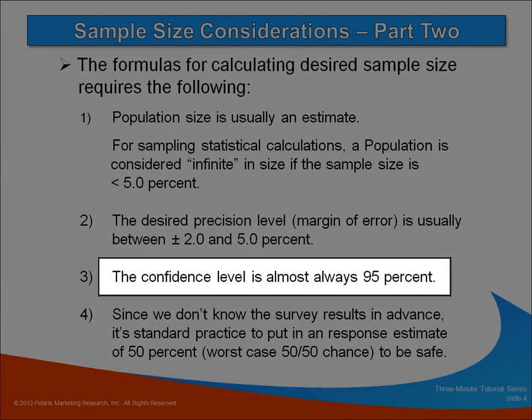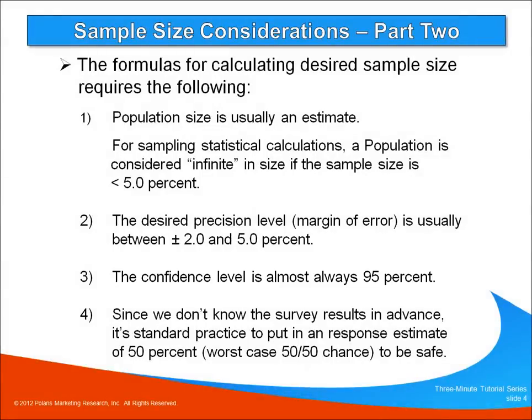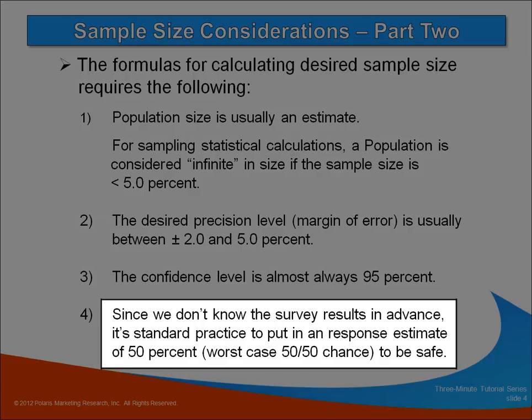Another rule of thumb is to always choose a 95% confidence level. You can't go wrong, as this is the default choice for most research professionals. And for the final input item, since we can't know in advance what the response might be, we use a worst-case 50-50 probability chance, translating to a 50% proportion estimate of what the response will be.